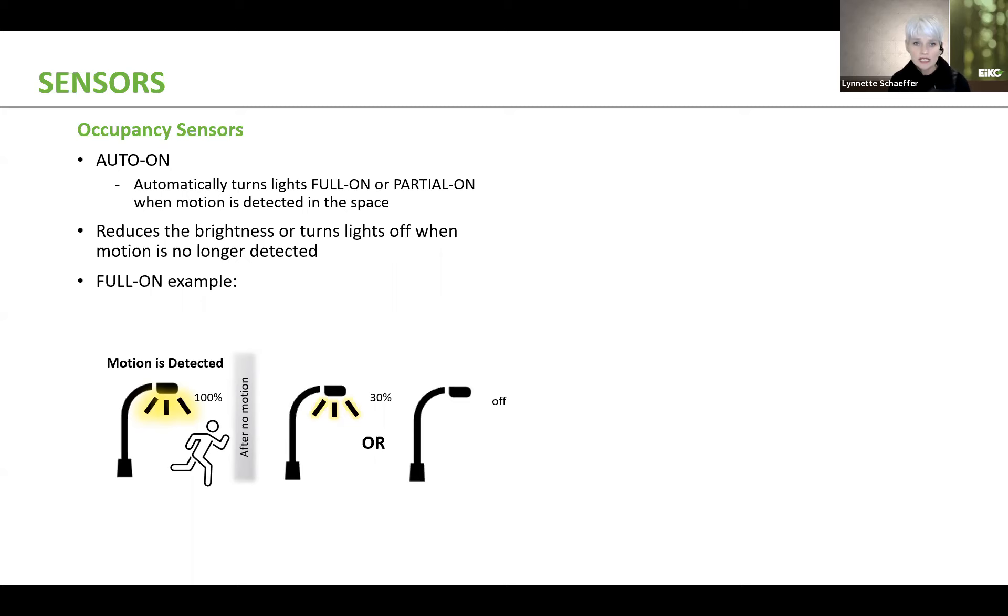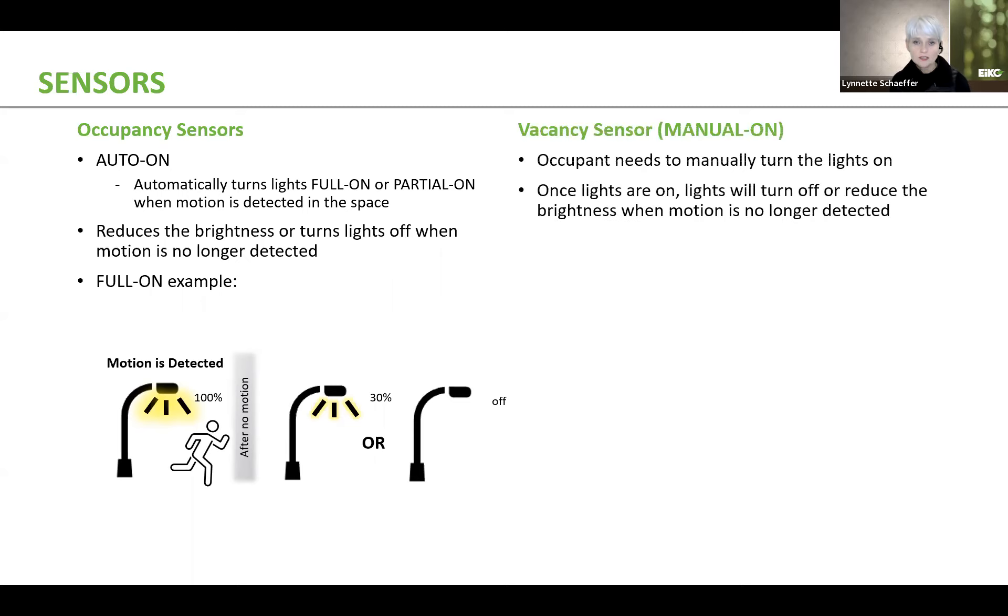The next one is vacancy sensors. And vacancy sensors, on the other hand, it's kind of funny, they don't automatically turn on. You actually physically have to manually turn the lights on. So unlike the example of occupancy sensors, where somebody walks in, the lights turn on, vacancy sensors means that you have to manually turn the lights on, but they will shut off after there's no motion. So in this particular example, you have someone, they walk into the office,